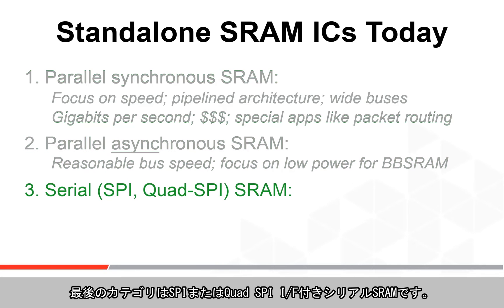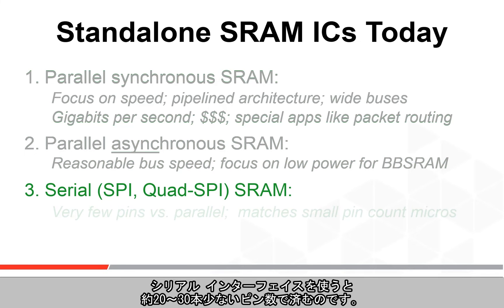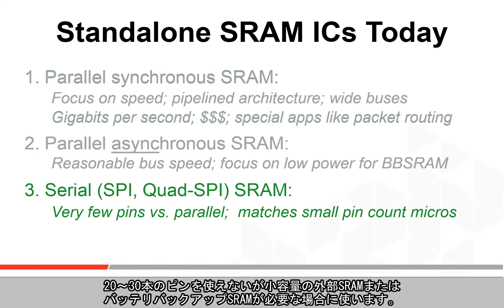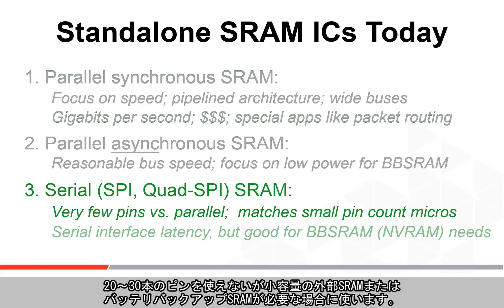The last category is serial SRAM with an SPI interface or a quad SPI interface. A serial interface means about 20 to 30 fewer pins, so designers use low pin count microcontrollers that don't have 20 or 30 extra pins for a parallel SRAM, but still need just a small amount of external SRAM or battery-backed SRAM for their target application.